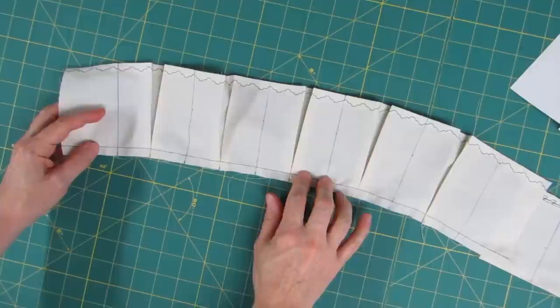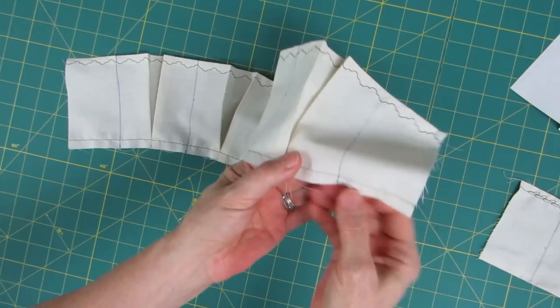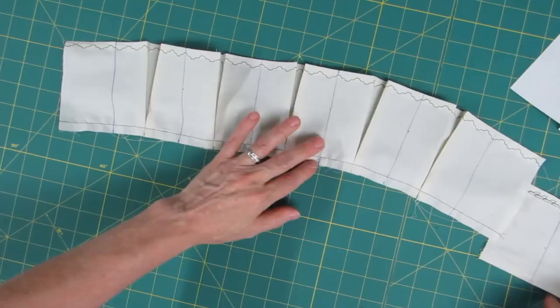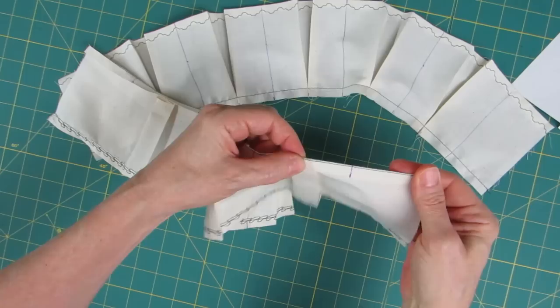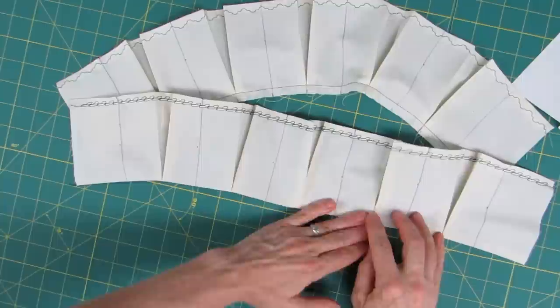Once you have your pleats all pressed out, then what you'll want to do is go ahead and put a line of basting in, one centimeter off of the bottom. So it will look something like this. And then once you have that basting, you can go over to the ironing board and press right along the line to turn it up.